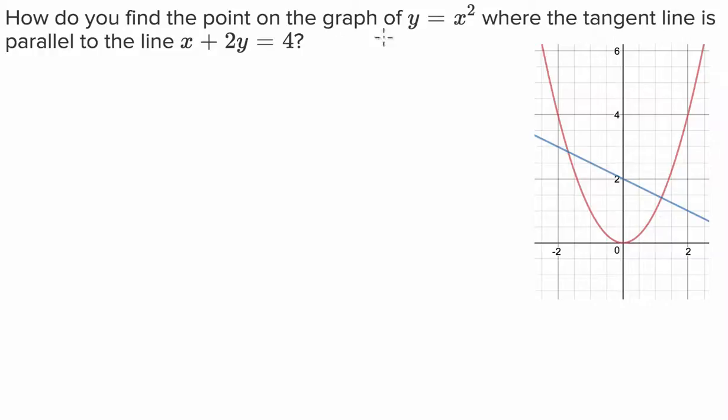So when we do parallel, one of the characteristics of parallel lines is that their gradients are the same. So m1 has to equal m2. So what we're going to do is we're going to figure out what the gradient of this line here is, on our plot here, and then we're going to work out at what point on the x squared line does the gradient equal the gradient that we found.